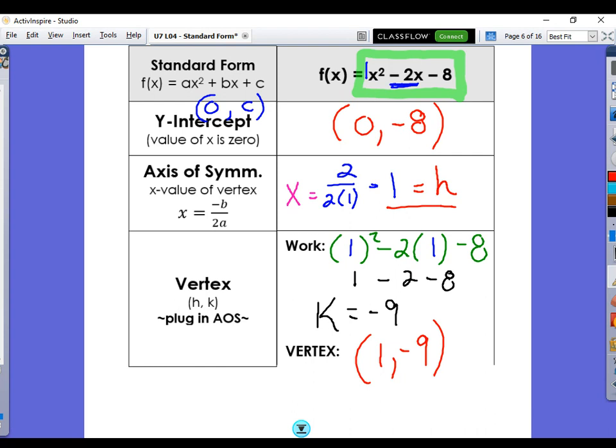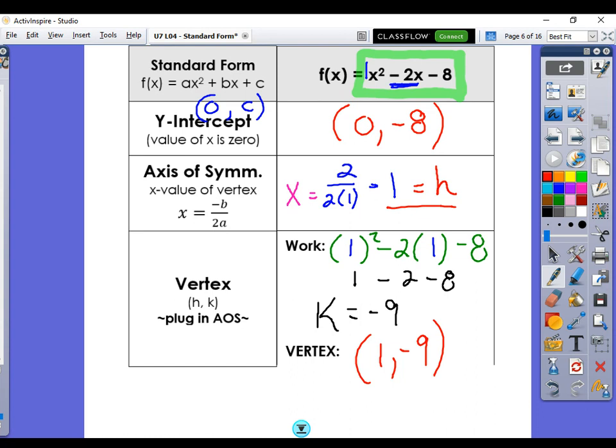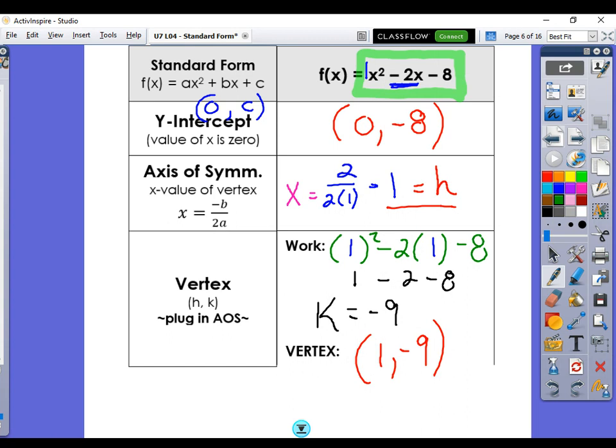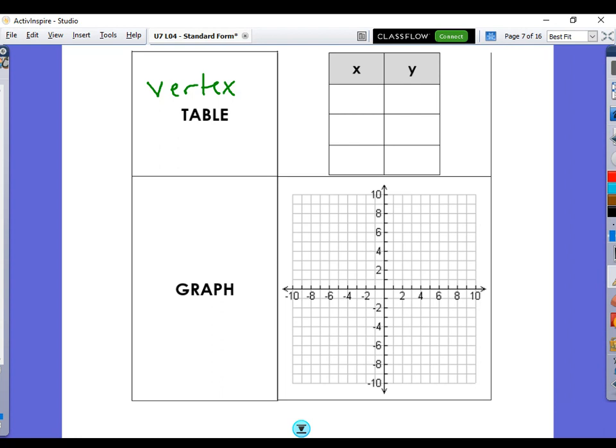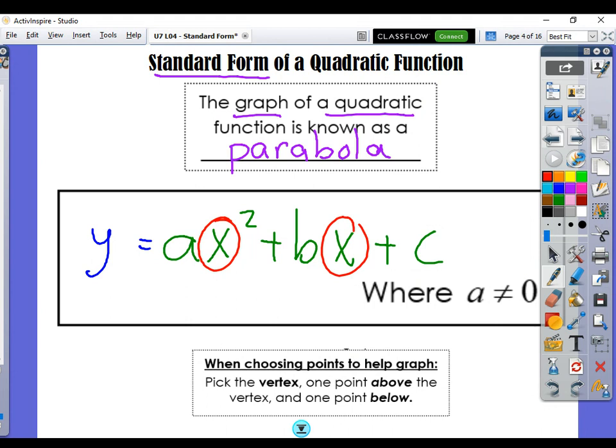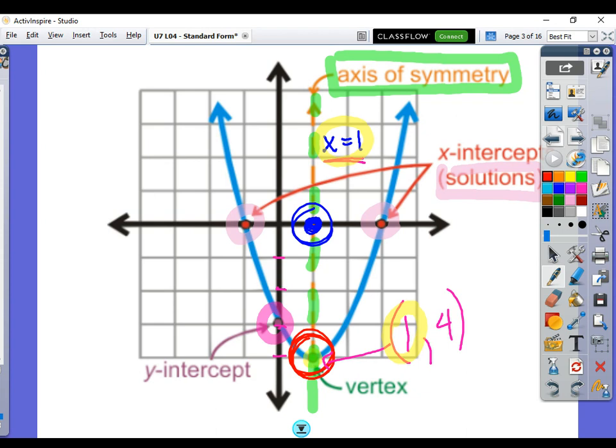So we've got our y-intercept, our axis of symmetry, and our vertex. We're moving on to the actual table and graph. Now here's how easy this is. Check it out. That vertex you just found, 1, negative 9, you always put the vertex in the middle. The vertex always goes smack dab in the middle. So 1, negative 9 goes right there. Because the vertex is the middle of your parabola, it's that line of symmetry.